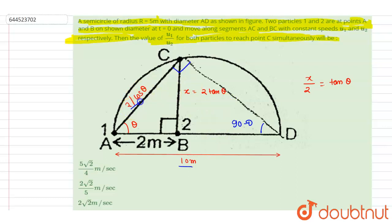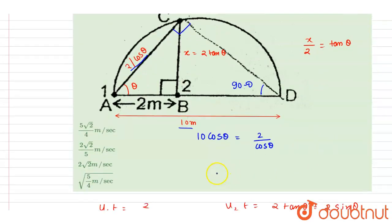This distance I will write down is 10 cos theta, which equals 2 by cos theta. From here you can see, you got the cos theta value - it is 1 by 5.